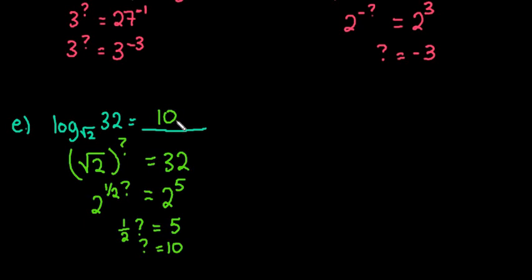So the square root of 2 to the 10th power would give us 32. And just to show you why that works that way, if you take square root of 2 to the 10th power, remember that square root of 2, we could rewrite this as 2 to the 10 divided by 2 power, which gives us 2 to the 5th, which is 32.